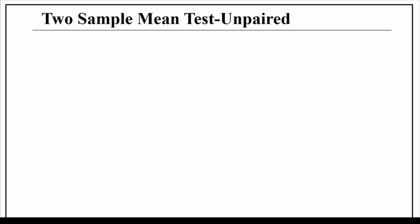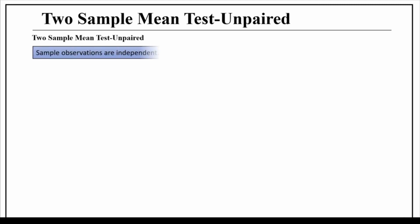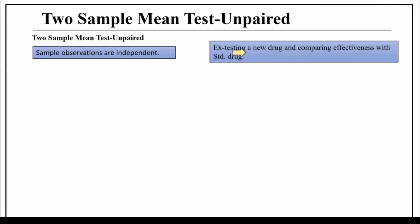Hello friends, welcome again. The topic we will cover here is two-sample mean test for unpaired observations. We perform this test when the sample observations are independent — for example, testing a new drug and comparing its effectiveness with a standard drug.